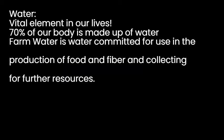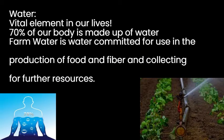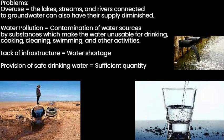Water, as we know, is a vital element of our lives. That is because 70% of our body is made of water. There is also water that is used within agriculture — farm water. It is water that is connected or used to production of wood, fiber and collecting resources. The main four problems of water are overuse, water pollution, lack of infrastructure, and the provision of safe drinking water.